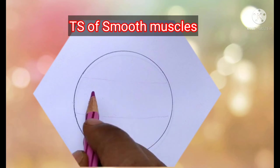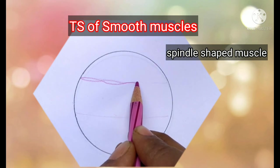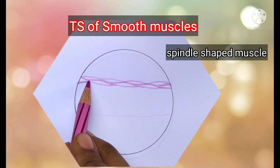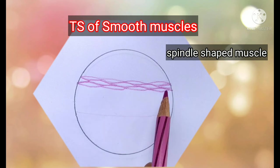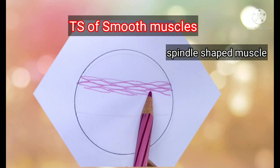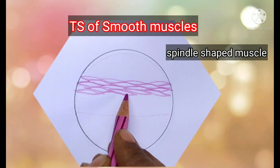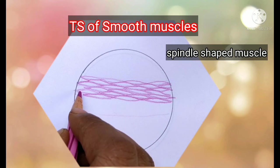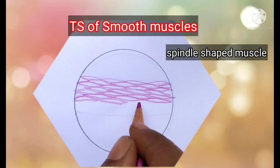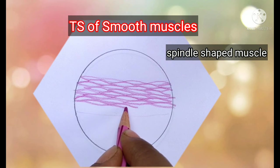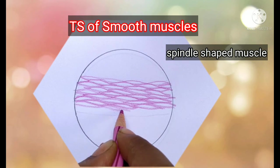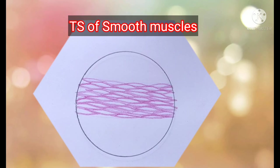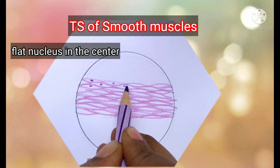Now coming to smooth muscles. Smooth muscles are involuntary and are seen in many soft tissues — the gut, respiratory system, and elsewhere. In longitudinal section, smooth muscle cells are spindle-shaped with tapering ends. The bulge in the center is due to the nucleus. They are connected by gap junctions so they work synchronously, so don't leave much gap between the smooth muscle cells. Each cell has a tapering end and a flat nucleus in the center.